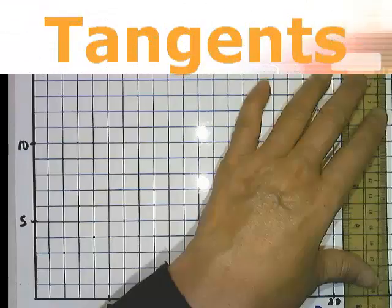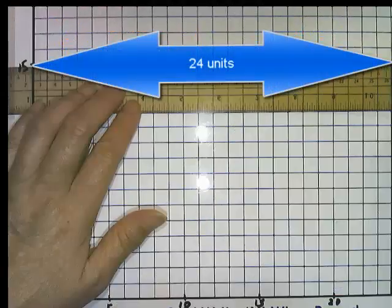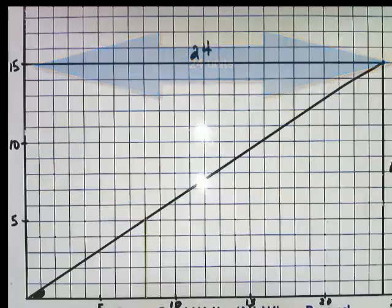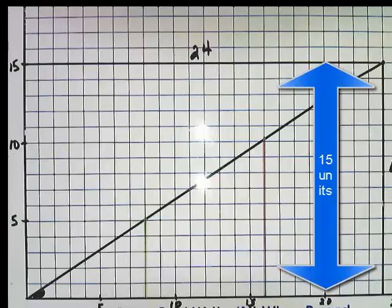In this video we're going to talk about the tangent ratio. So what I'm doing right now is setting up the coordinate plane. And I'm going to draw a rectangle that is 24 units across the x-axis and 15 units on the y-axis.